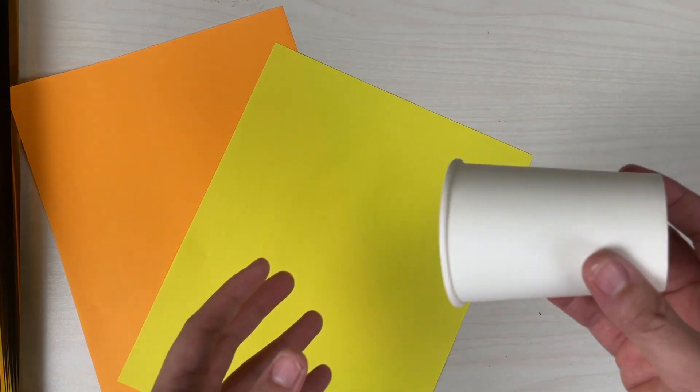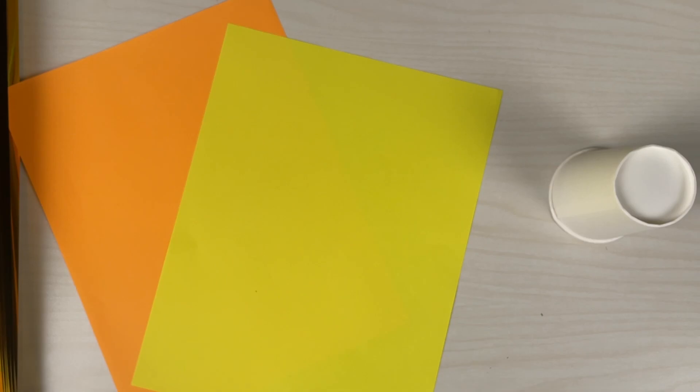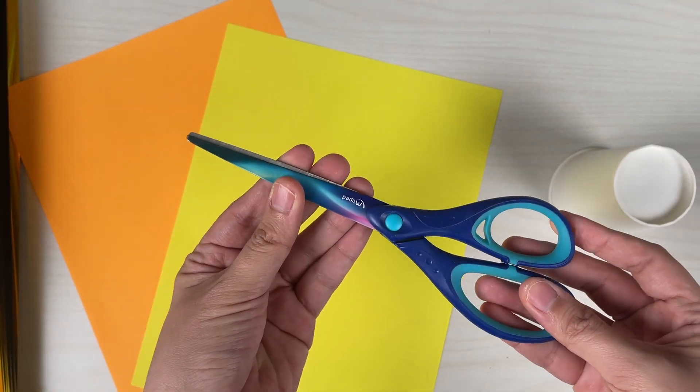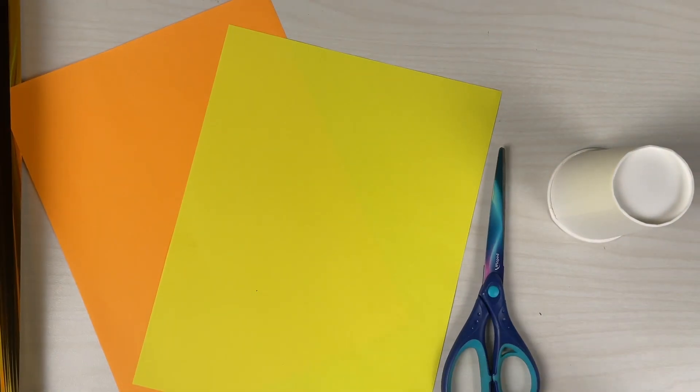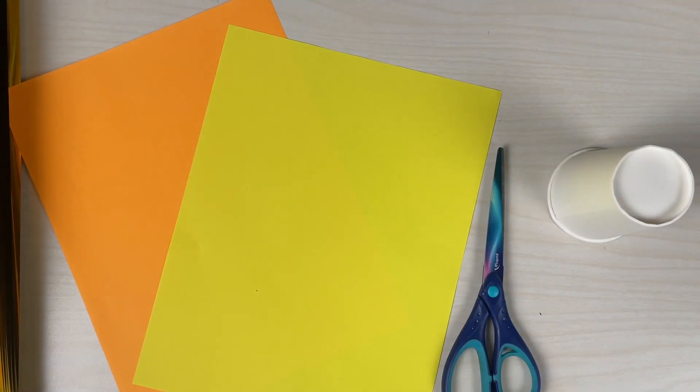Some yellow and orange paper, a paper cup, a pair of scissors and some double-sided tape, and don't forget we'll also need some stickers.